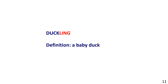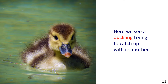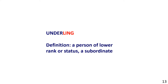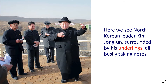DUCKLING — Definition: A baby duck. Sentence example: Here we see a duckling trying to catch up with its mother. UNDERLING — Definition: A person of lower rank or status; a subordinate. Sentence example: Here we see North Korean leader Kim Jong-un surrounded by his underlings, all busily taking notes.